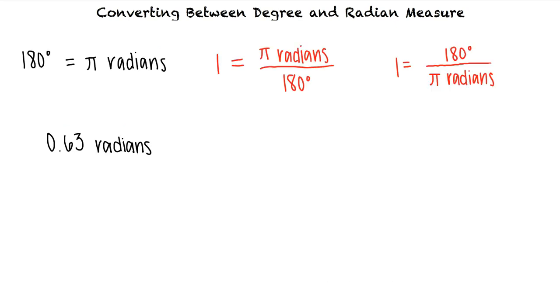Let's convert 0.63 radians to degree measure. In order to make our radians cancel and result in a final answer of degrees, we must use the conversion factor that has radians in the denominator and degrees in the numerator.